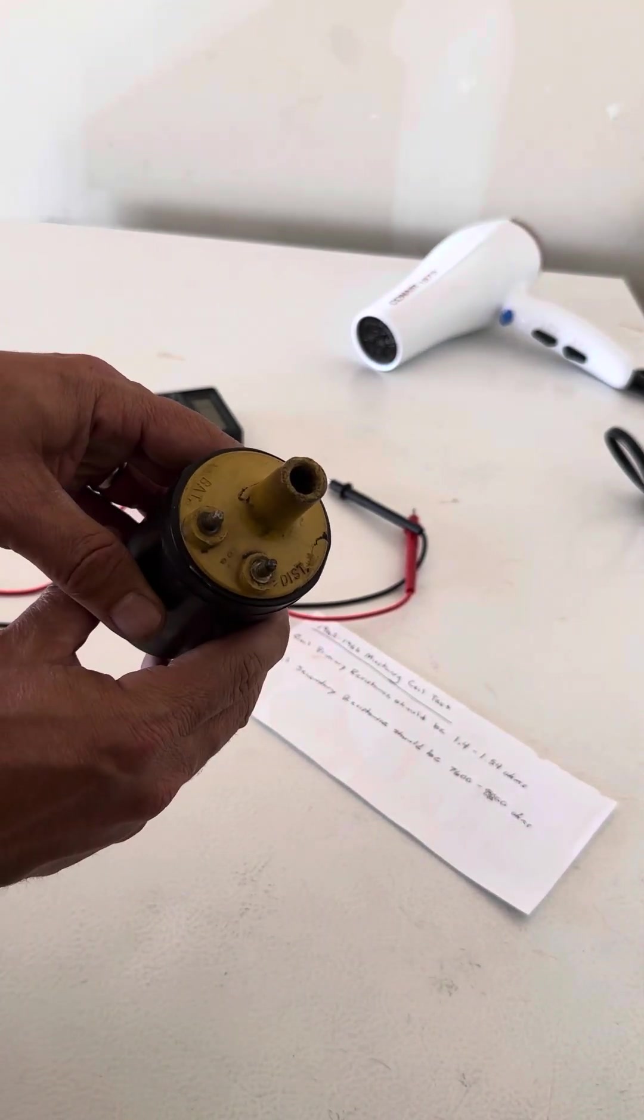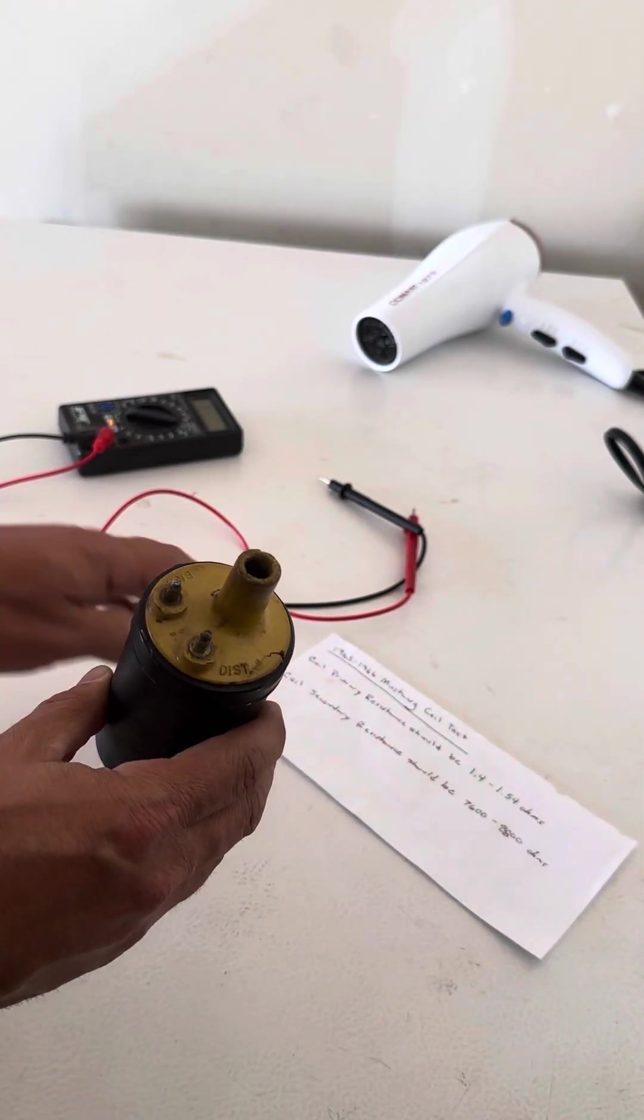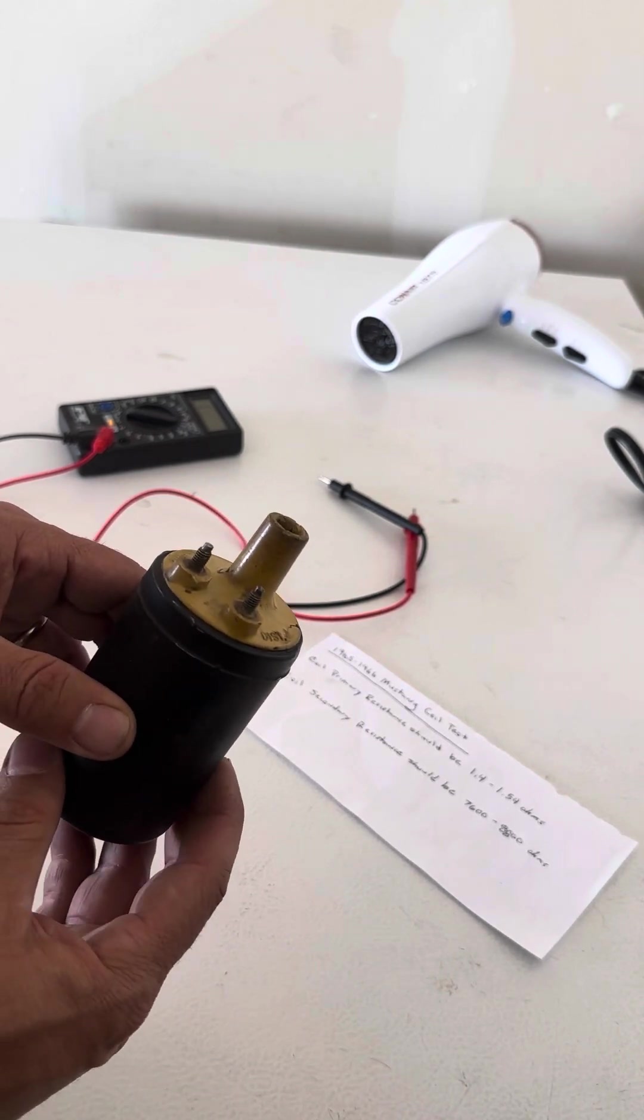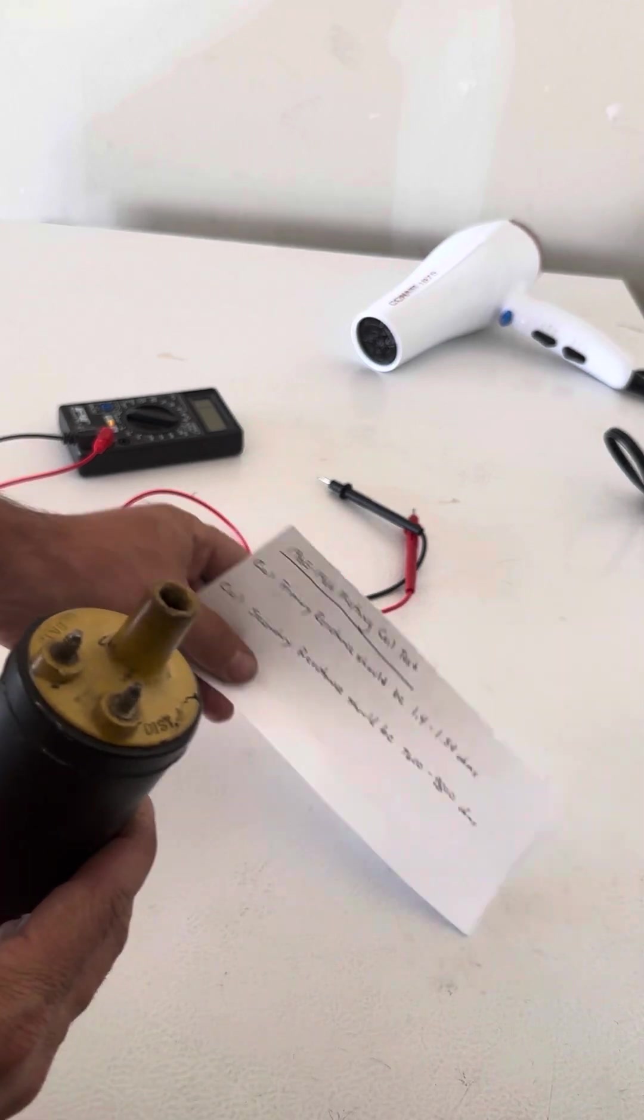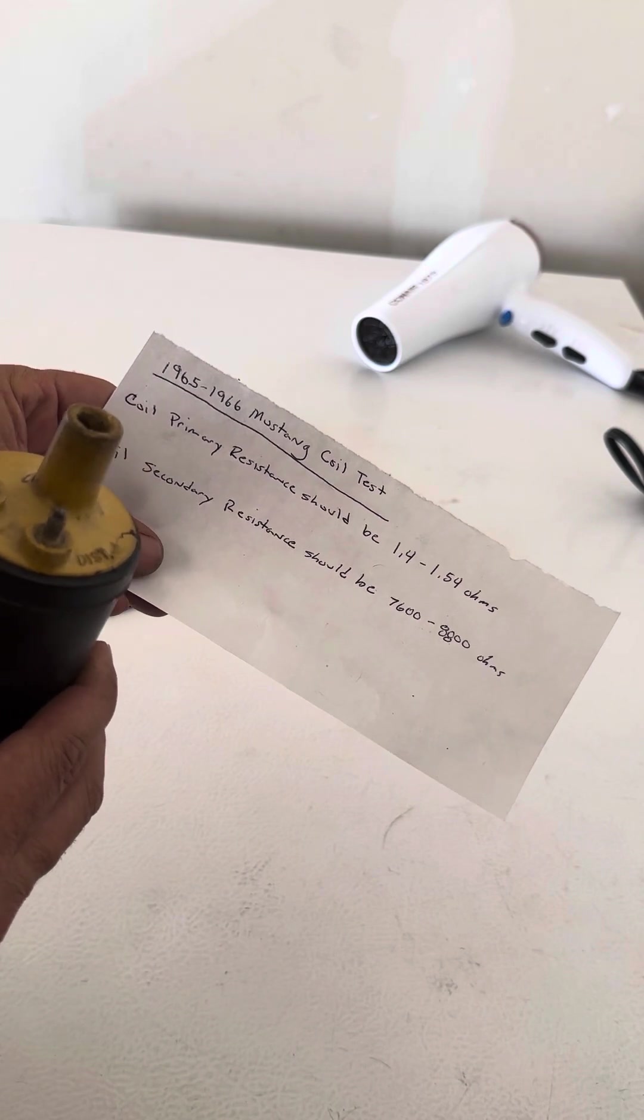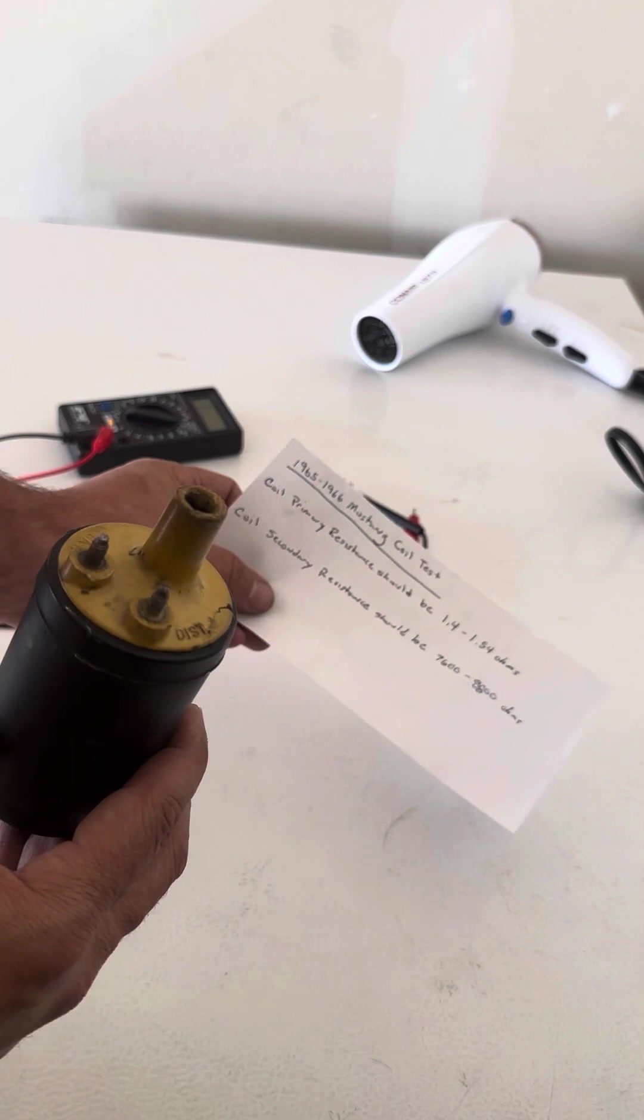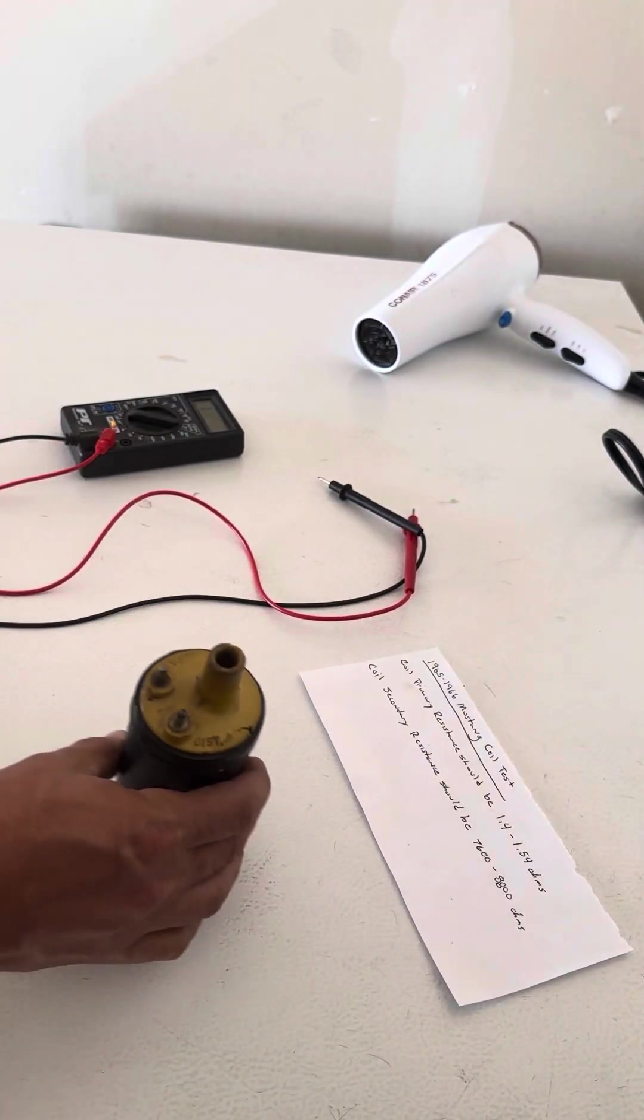I wanted to test this coil and show how a coil test occurs. It has a primary resistance which should be between 1.4 and 1.54 ohms, and the coil secondary resistance should be 7600 to 8800 ohms. So here's how you do the primary resistance test.